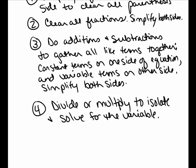Third, do additions and subtractions on both sides of the equation in order to gather together your like terms. Get all your x terms on one side and all your constant number terms on the other side of the equation. And in the very last step, do your division or multiplication to isolate your variable.